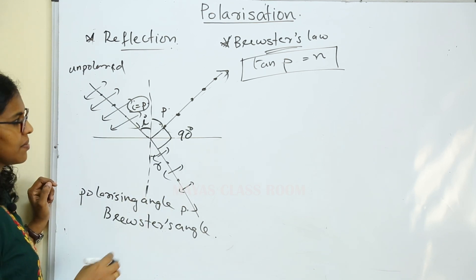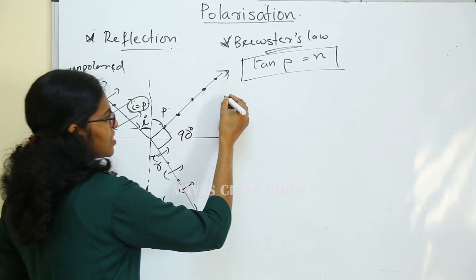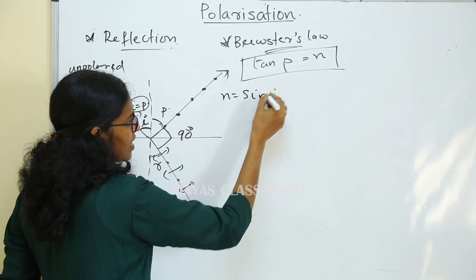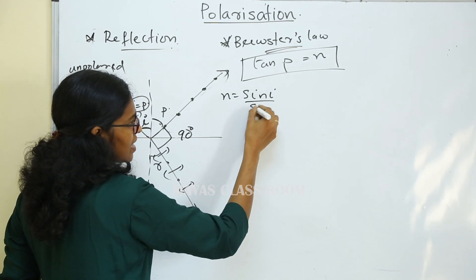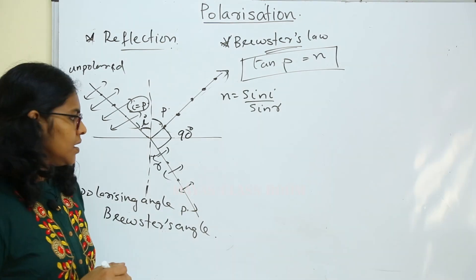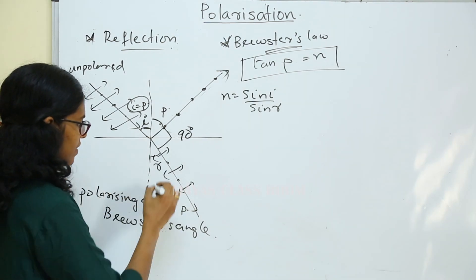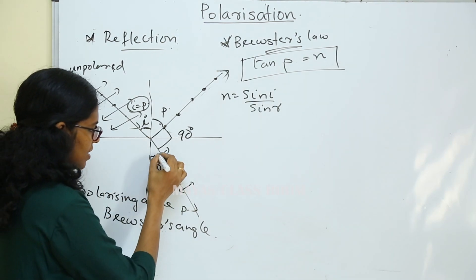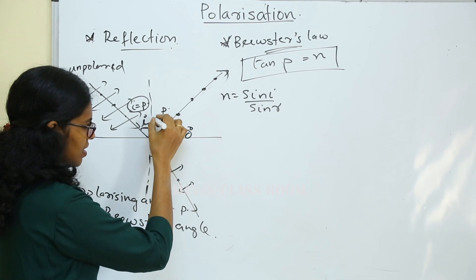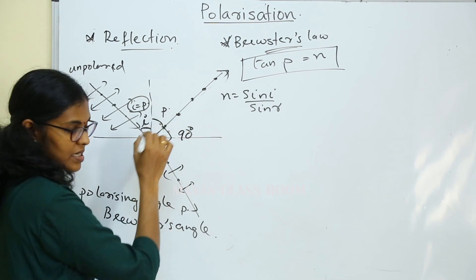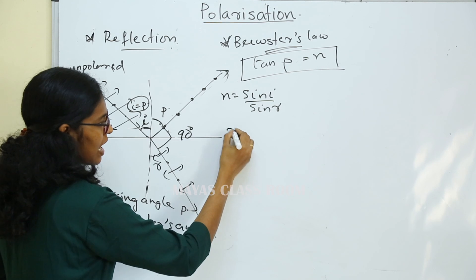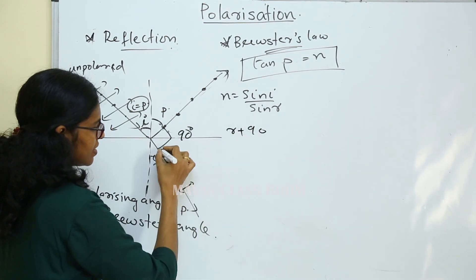What is Snell's law? Snell's law is: n is equal to sin(i) divided by sin(r). If the angle of reflection is 90 degrees here, this is the polarizing angle.